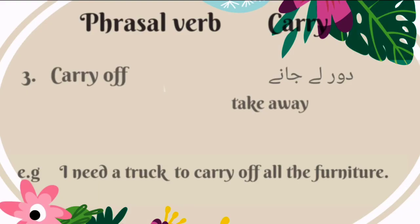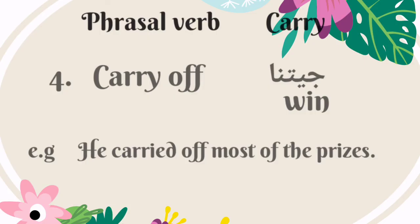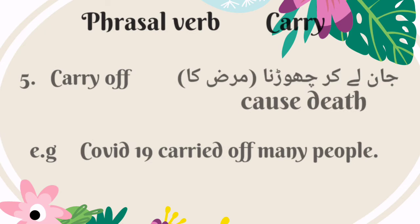The third phrasal verb is 'carry off.' It means take away — Urdu mein is ka matlab hai dur lye jana. For example: I need a truck to carry off all the furniture. 'Carry off' also means to win — Urdu mein is ka matlab hai jeetna. For example: he carried off most of the prizes. A third meaning of 'carry off' is cause death — Urdu mein is ka matlab hai jaan lye kar chhodna. For example: COVID-19 carried off many people.